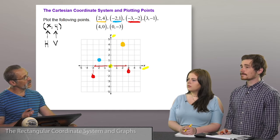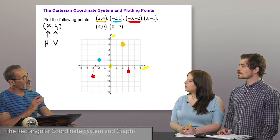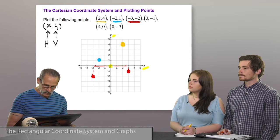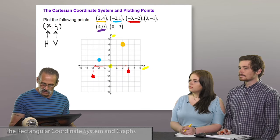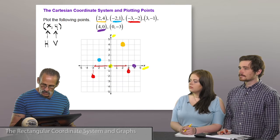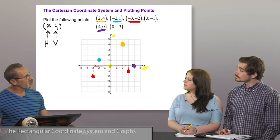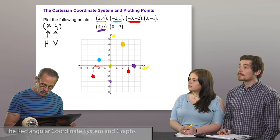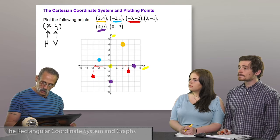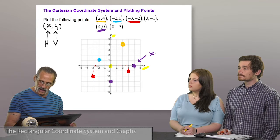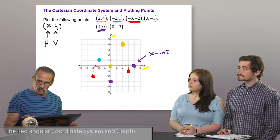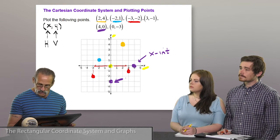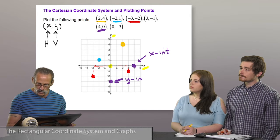Now we have two more points that lie along the actual axes themselves. The point (4, 0): we go right 4 units, neither up nor down — the point is right here. For (0, -3): we don't go left or right, but we go down 3 units. The point (4, 0) is referenced as an x-intercept, and (0, -3) is referenced as the y-intercept.